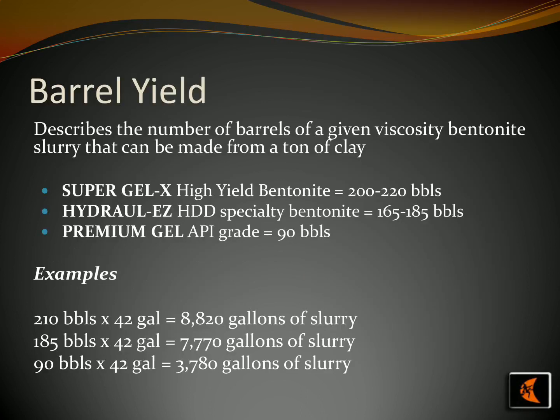A bentonite slurry's yield can greatly differ depending on the kind of bentonite used. SuperGel X high-yield bentonite produces 200 to 220 barrels of a given viscosity of slurry from one tonne of clay. Hydrol EZ HDD specialty bentonite produces 165 to 185 barrels from one tonne, and premium gel API-grade bentonite produces only 90 barrels of slurry per tonne. A yield of 210 barrels equates to 8,820 gallons of slurry; 185 barrels yields 7,770 gallons; and 90 barrels yields 3,780 gallons.